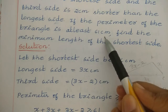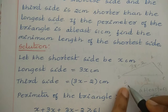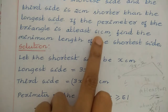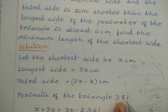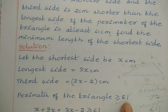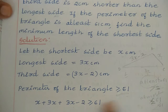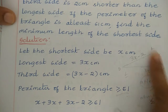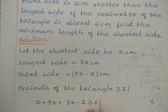Note: if you had 'at most 61,' you would use less than or equal to, since at most means the maximum is 61 or less. But here we have 'at least,' meaning minimum is 61 or more. So perimeter ≥ 61. To find the minimum length of the shortest side, we add all three sides: x + 3x + (3x − 2) ≥ 61.